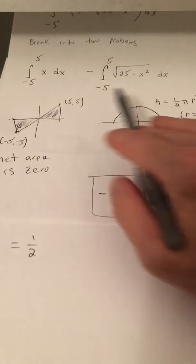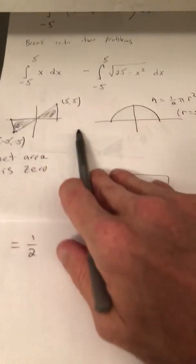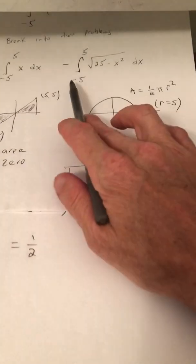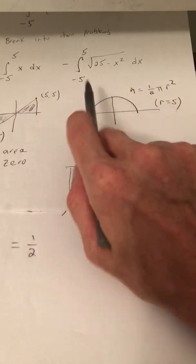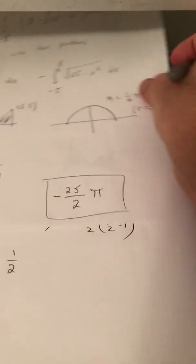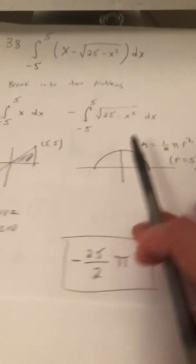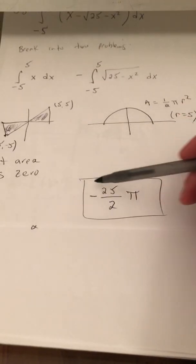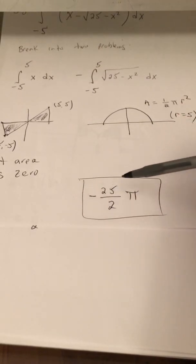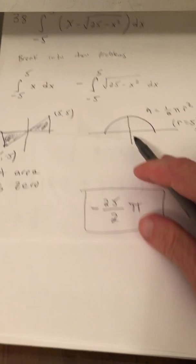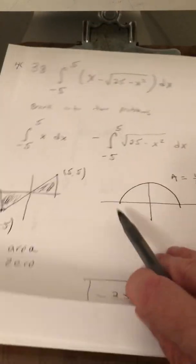So remember, this one is 0. So what we end up with is negative whatever we get here. So it's going to be negative 25π over 2, or negative 25/2 π. So that's number 38.